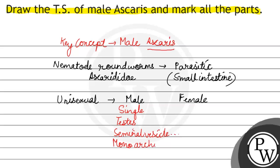Whereas, जो female Ascaris होते हैं उसमें present reproductive organs होते हैं double. For example, double ovaries and oviducts, uterus, etc. So, female Ascaris होती हैं didelphic in nature.